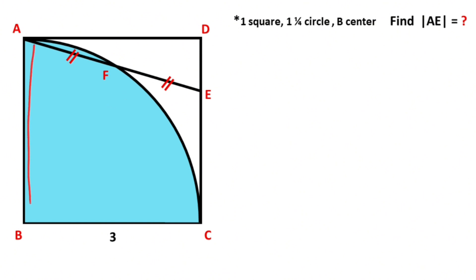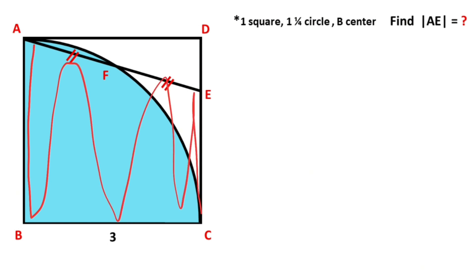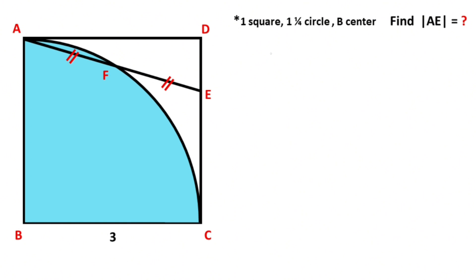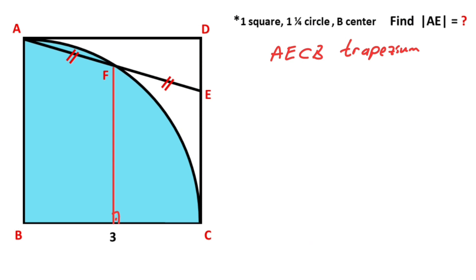If you notice, we have a trapezium here — AECB is a trapezium. Therefore, if you draw the middle base of the trapezoid, it must equal 90 degrees. We know these are also 90 degrees. Moreover, these two parts are equal, which means these two parts are also equal to each other, so they must each equal 3 over 2.